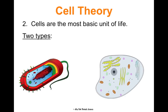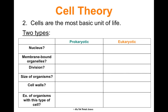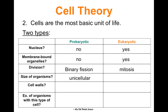The cell is the most basic unit of life, and there are two types of cells: prokaryotic and eukaryotic. Prokaryotic cells do not have a nucleus; eukaryotic cells do. Prokaryotic cells do not have membrane-bound organelles, but eukaryotic cells do. Prokaryotic cells divide through binary fission, while eukaryotic cells do mitosis. Organisms made of prokaryotic cells are unicellular — just one prokaryotic cell. Eukaryotic organisms, however, can be unicellular or multicellular; protists are eukaryotic organisms made of just one eukaryotic cell.